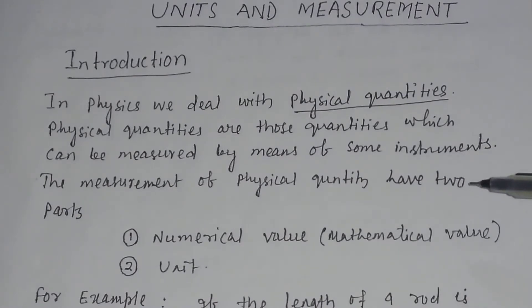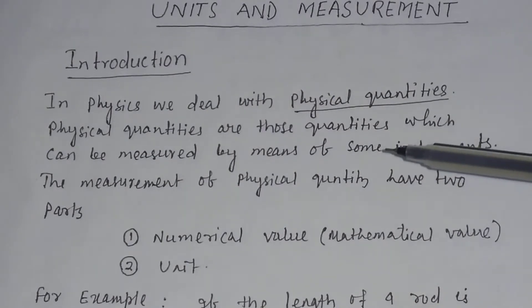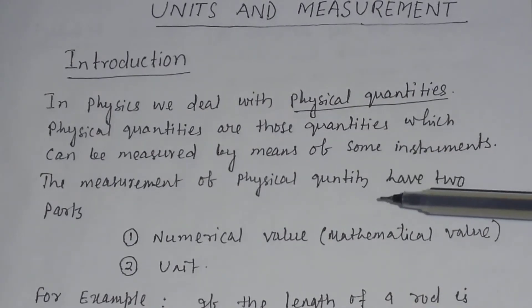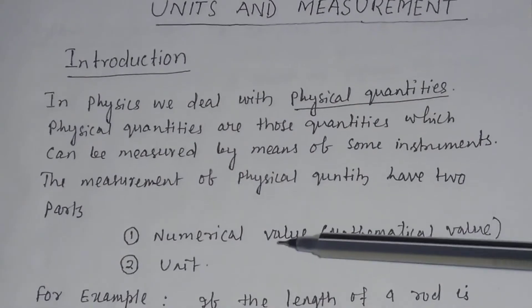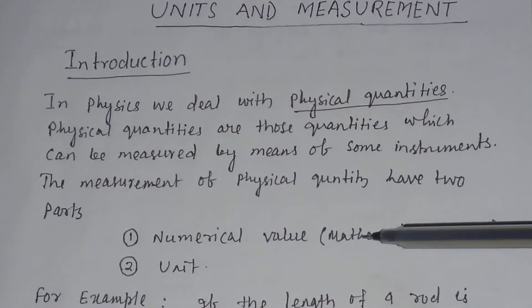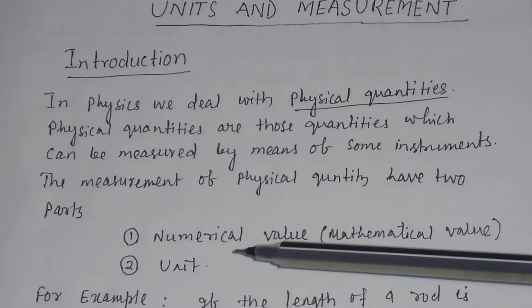The measurement of physical quantities have two parts. When you measure a physical quantity, or you may say measurable quantity, there are two parts in the measurement. One is called the numerical value or mathematical value, and the second part is called unit.